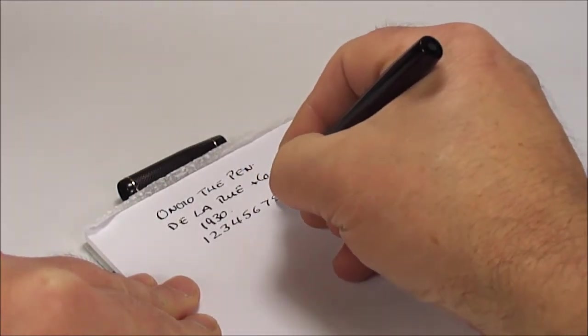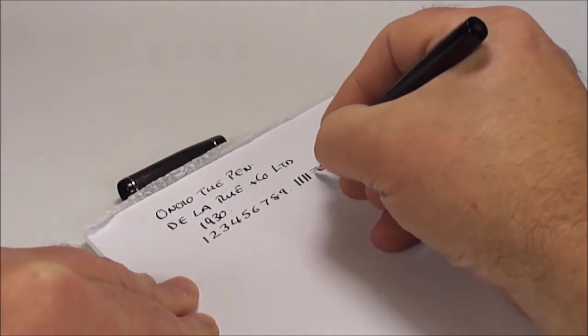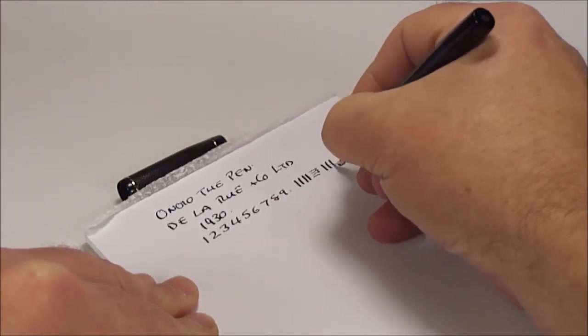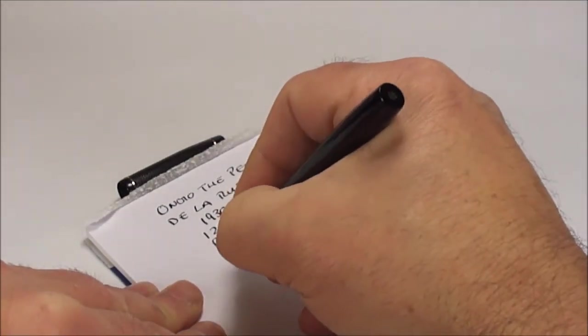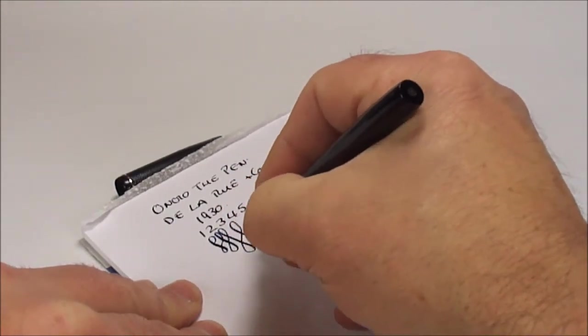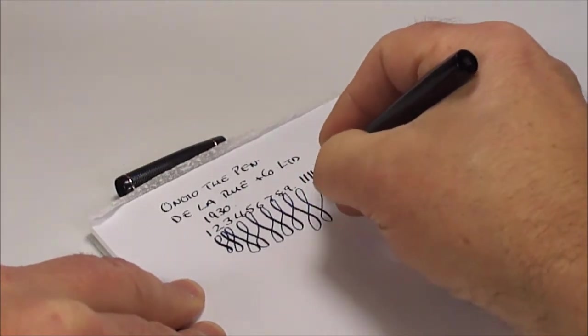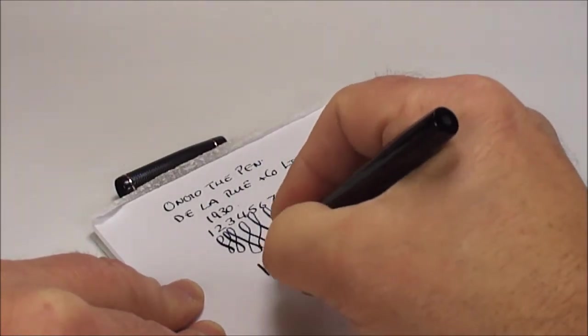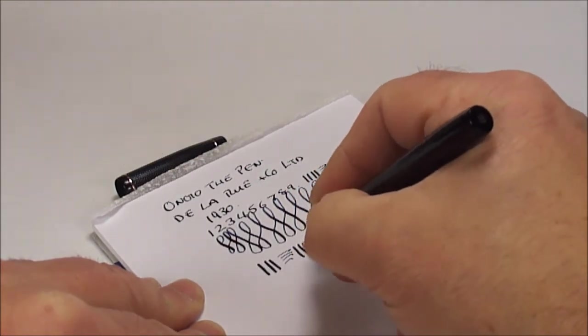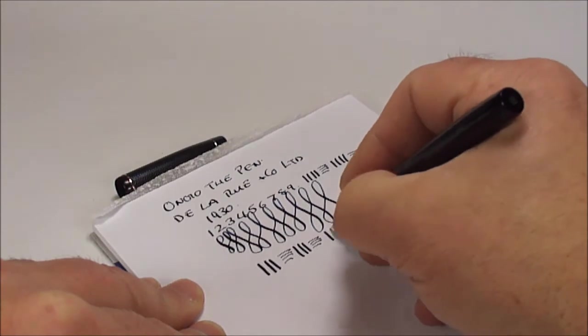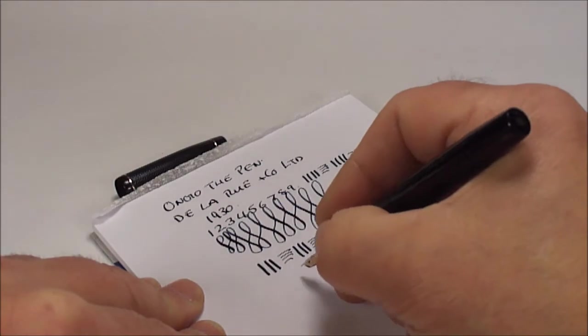As you'd expect from these nibs because they are renowned to be lovely nibs to write with. Now, as I'm chatting away to you and writing, I'm hoping you can see there we're getting a little variation in the line. So, on the downward stroke, we can get quite a broad line. On the cross stroke, we're getting a thin line. So, it's actually got a nice flexy nib.